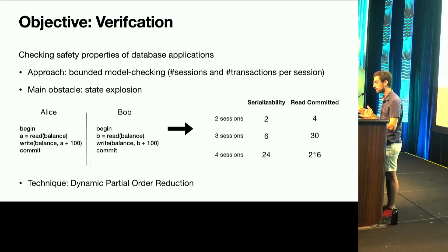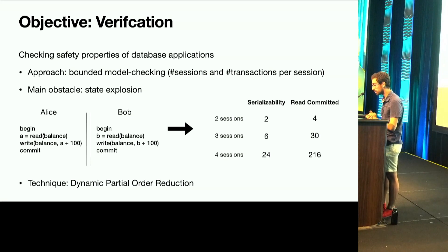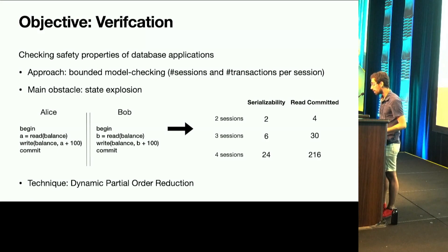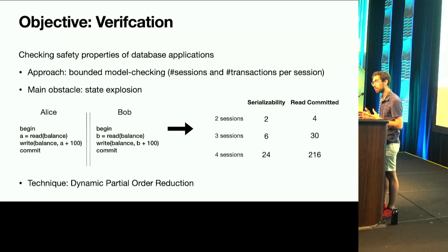Clearly, this is a problem. Our objective is to do verification — checking safety properties of database applications so that no bad state is ever reached. For that, we do bounded model checking, where we bound the number of sessions but also the number of transactions per session. If we try to do this naively, it is not scalable. For Alice and Bob under serializability or read committed, the number of executions is 2 and 4. However, with four friends — Charles and Douglas — each sending 100 euros to Claire, under read committed we observe more than 200 executions. This is due to state explosion, so we have to address it.